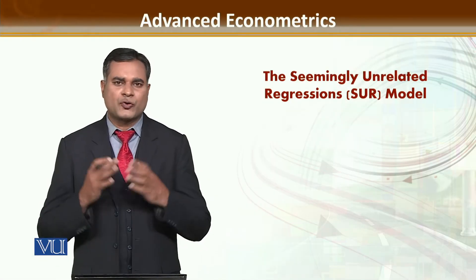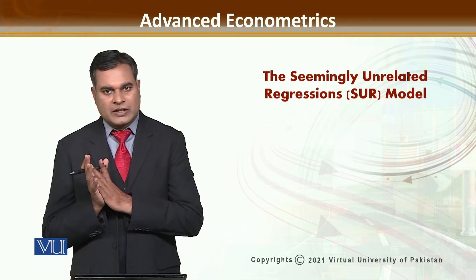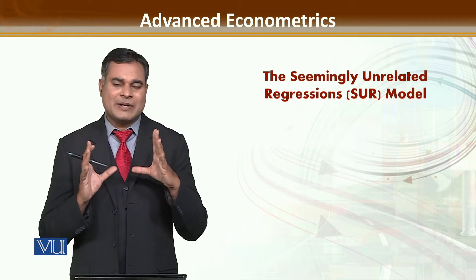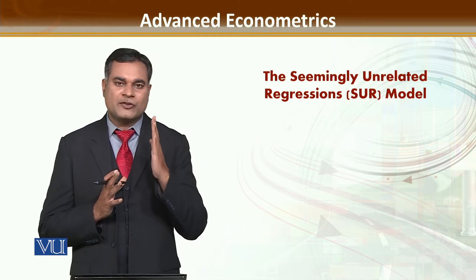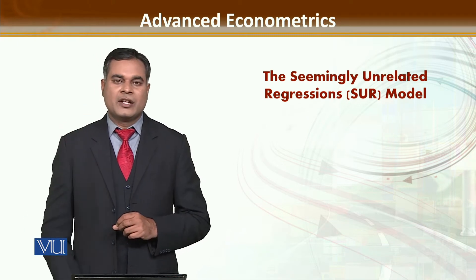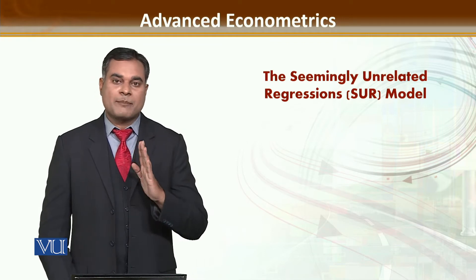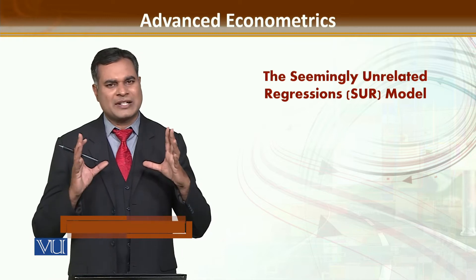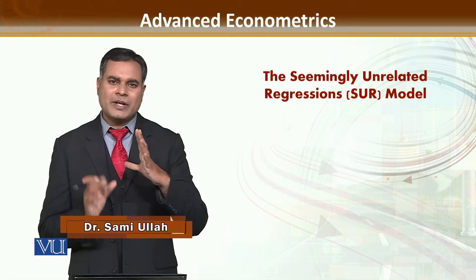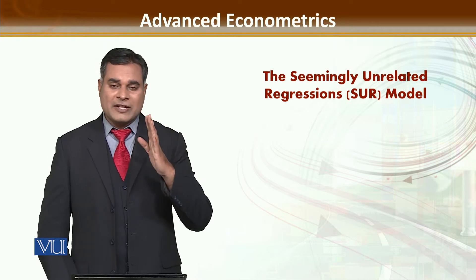As we have discussed about SOR, this model basically shows the interdependence of error terms. If you are going to estimate different models in which your dependent variable is going to change but you have the same independent variable, and if errors are correlated, then the best model is not OLS. The best model is SOR, because you have correlated errors, especially when you have a different factor in which you have to intervene and they are significantly correlated.